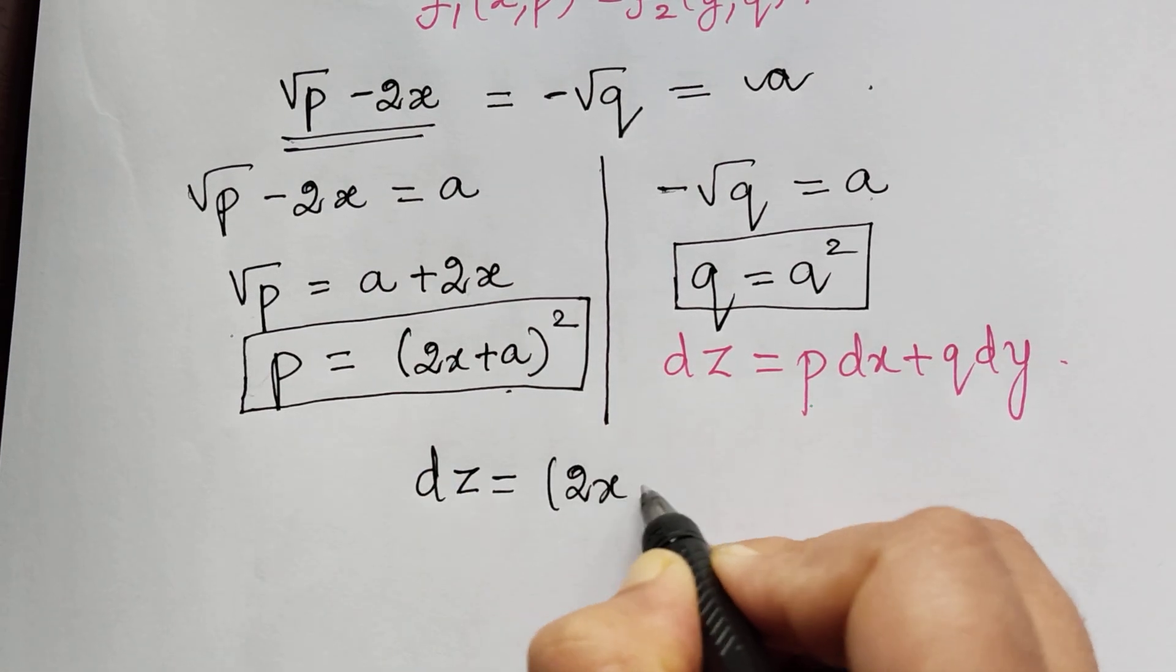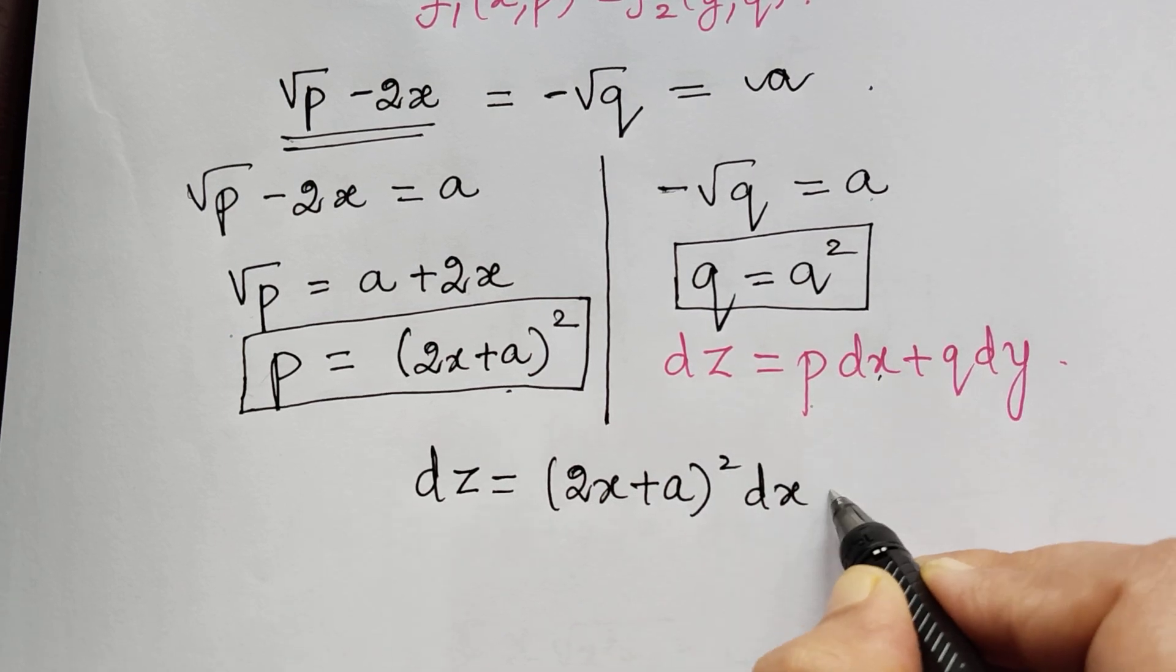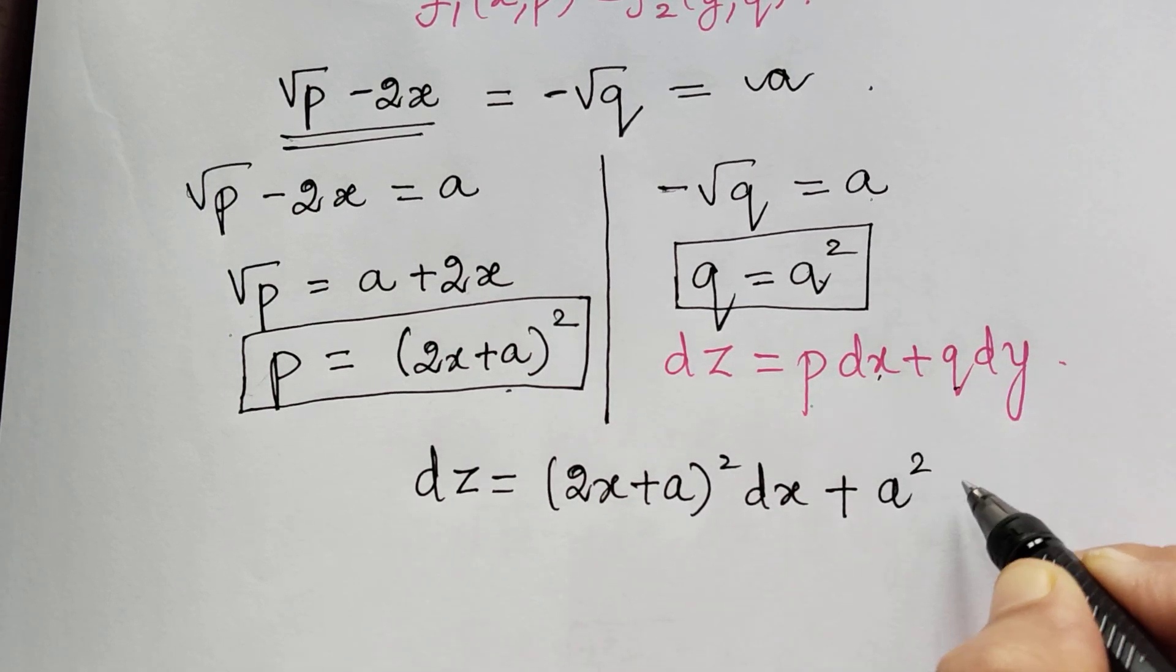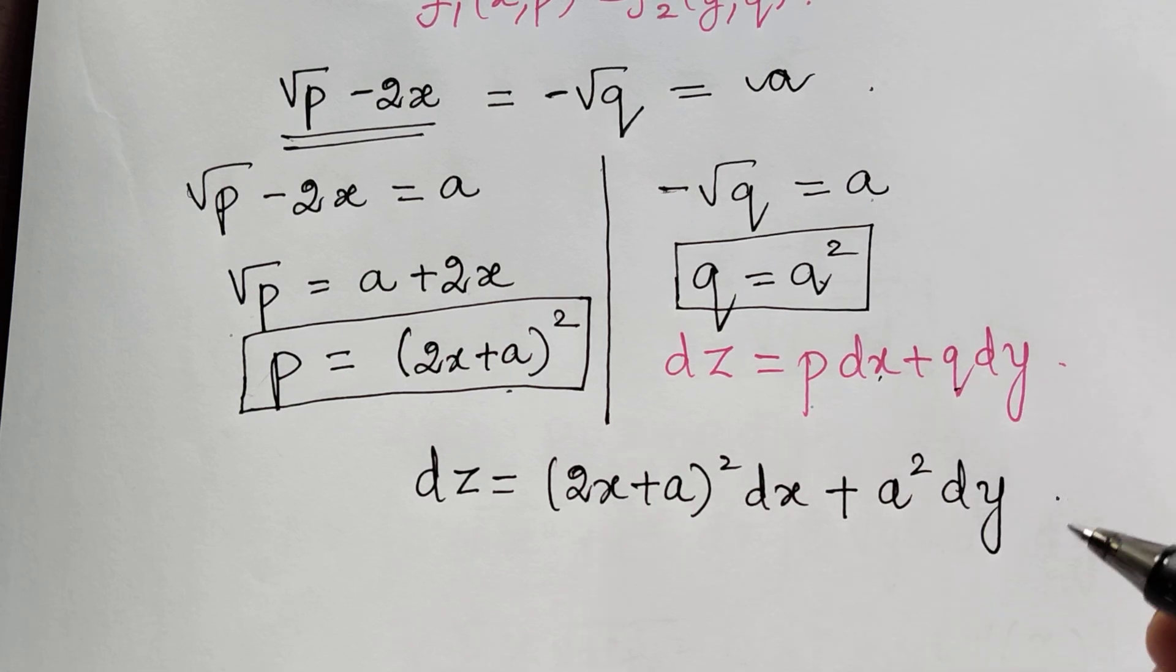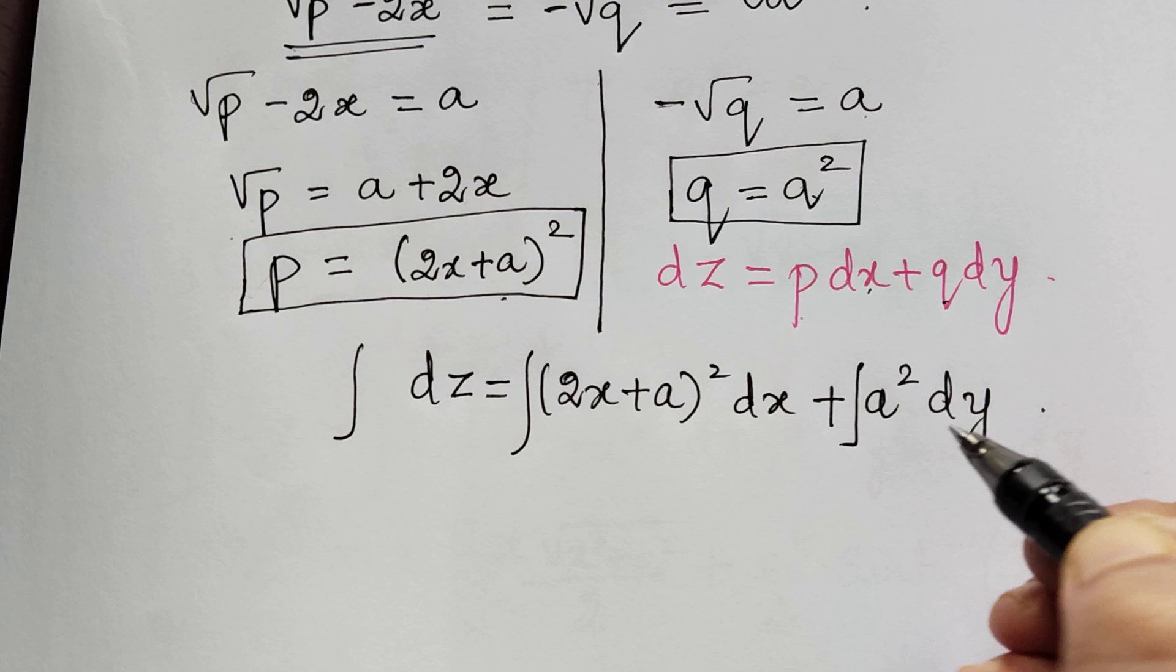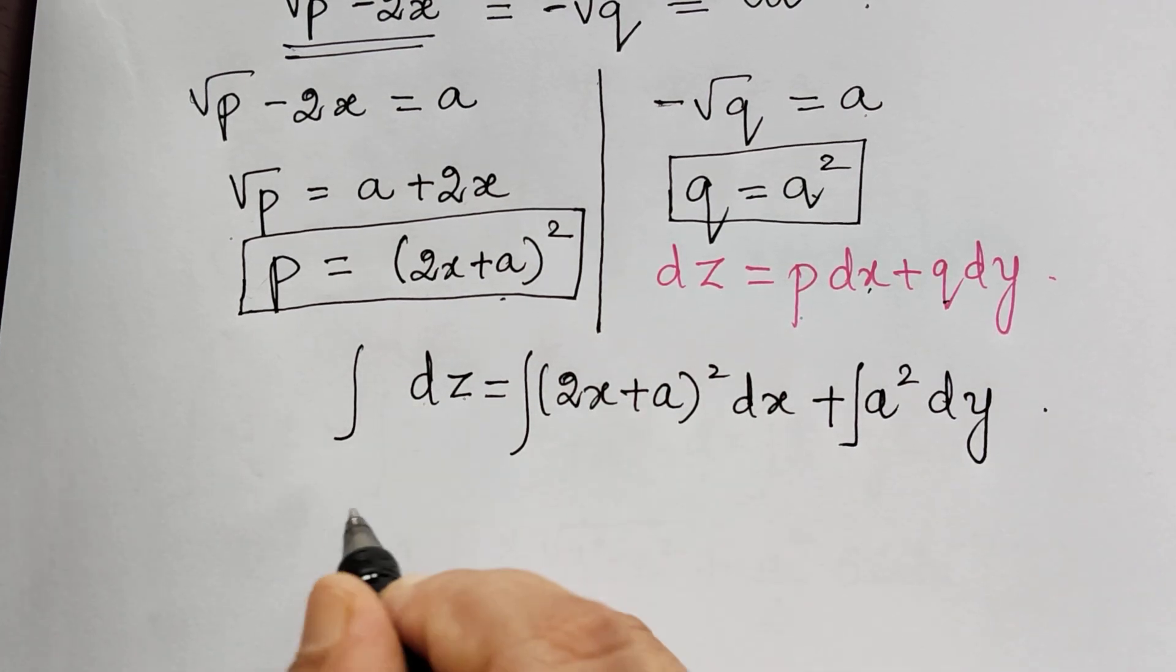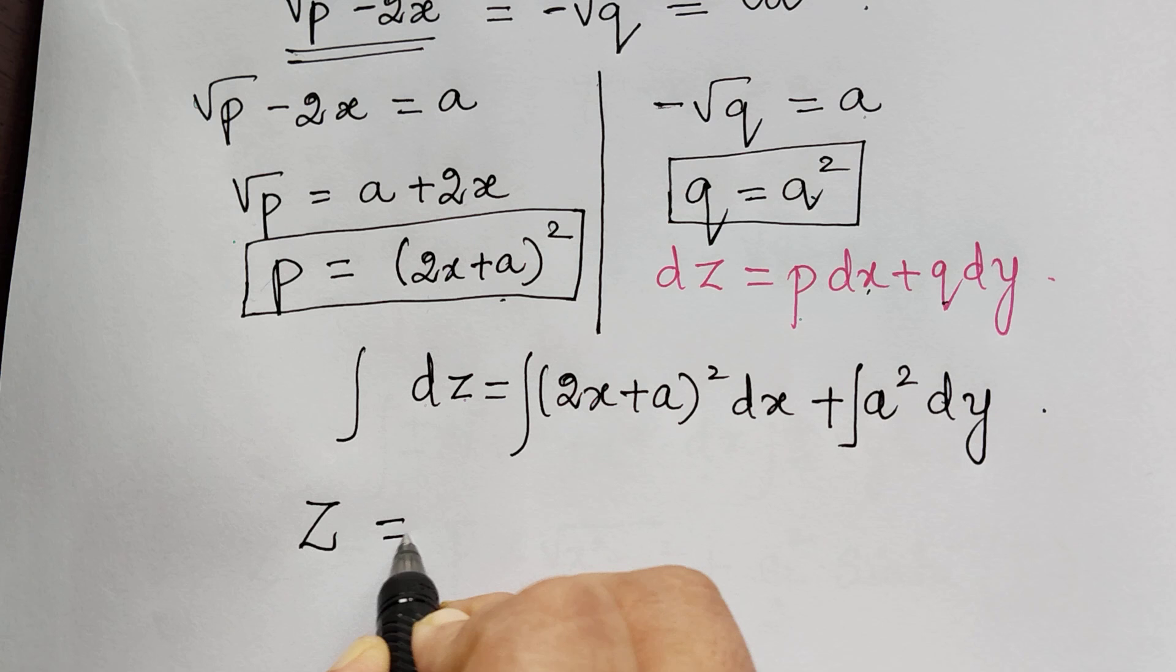Now integrating on both sides, the integration of dz is z. On the right, the integration of (2x + a)² is (2x + a)³ divided by 3.